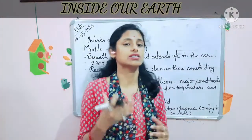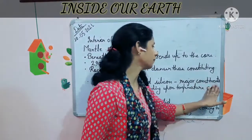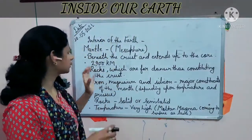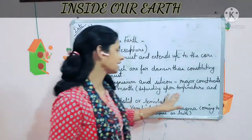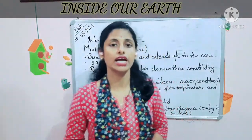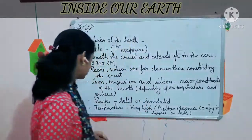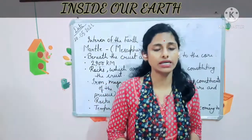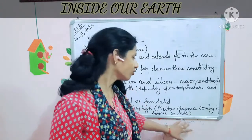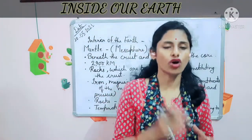The major constituents of the mantle are iron, magnesium, and silicon. The structure of the rocks depends upon the temperature and pressure conditions. These rocks can be solid or semi-solid due to the temperature and pressure conditions of the mantle. The temperature of the mantle is always very high because of the molten magma that comes out to the surface as lava during volcanic eruption.